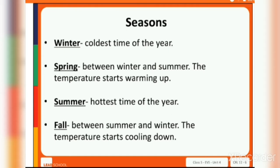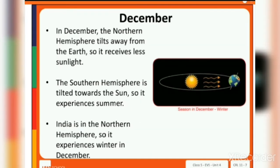The temperature starts cooling down and the temperature will decrease. In December, the northern hemisphere tilts away from the sun, so it receives less sunlight. The southern hemisphere is tilted towards the sun, so it experiences summer. India is in the northern hemisphere, so it experiences winter in December.